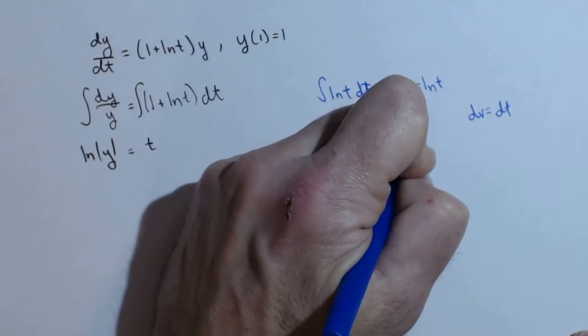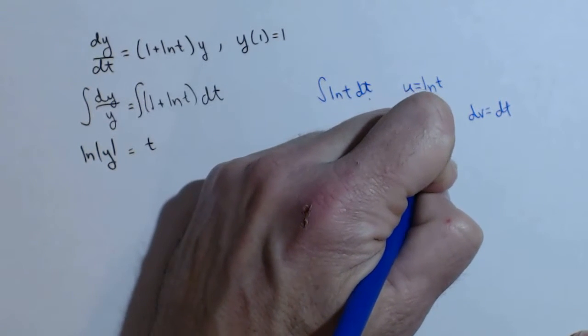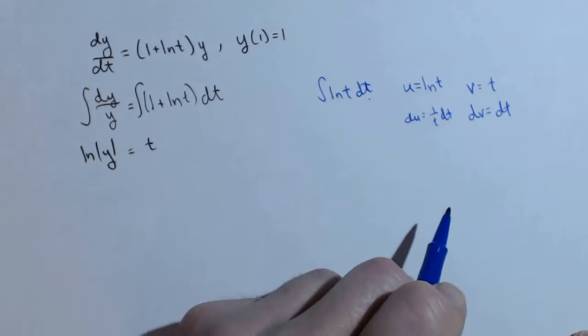That makes du 1 over t dt, and v ends up being t.